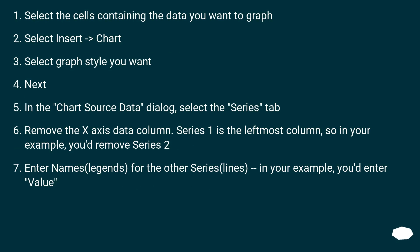Select the cells containing the data you want to graph. Select Insert > Chart. Select the graph style you want. Next. In the Chart Source Data dialog, select the Series tab. Remove the x-axis data column — Series 1 is the leftmost column, so in your example, you'd remove Series 2.